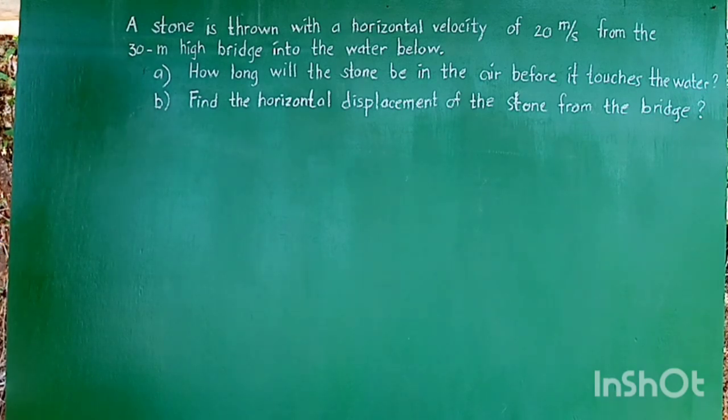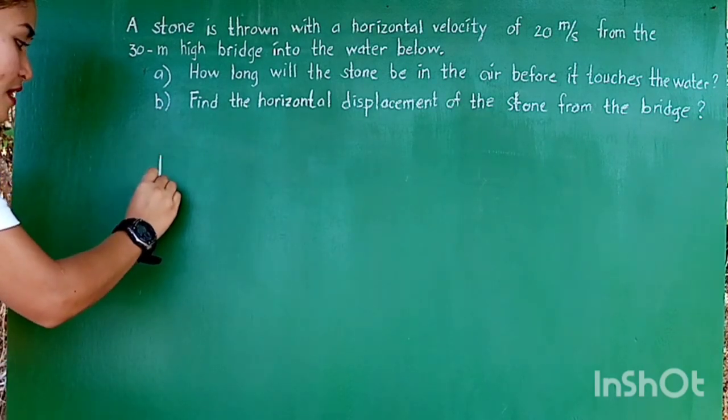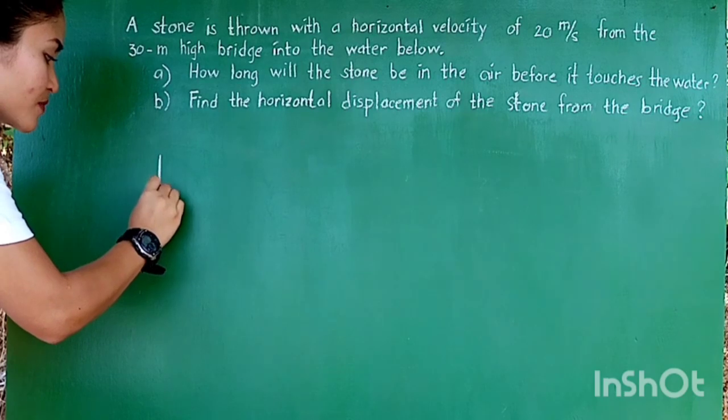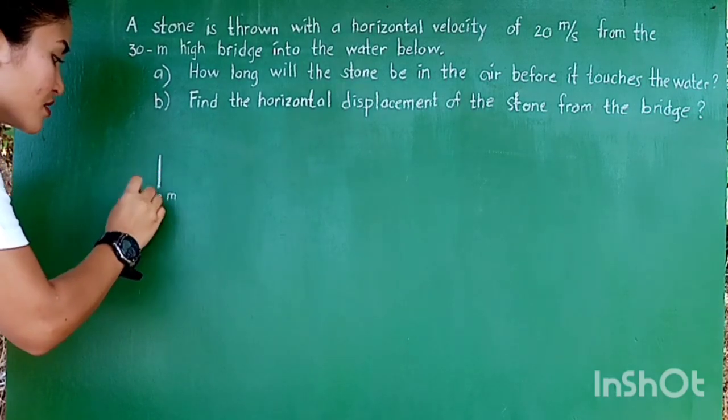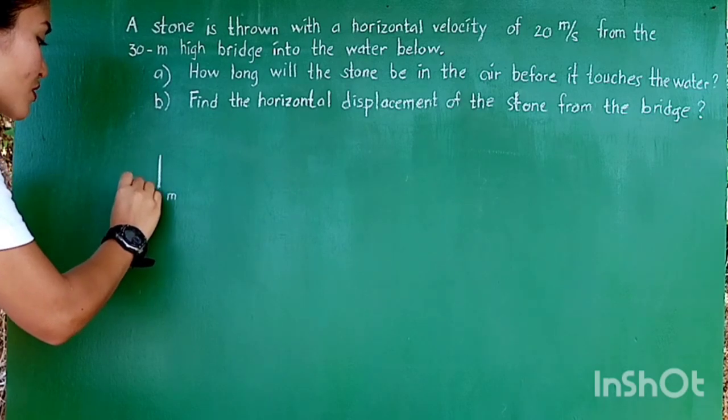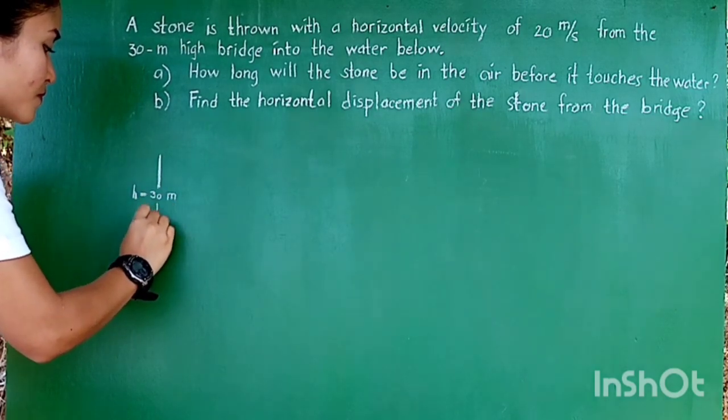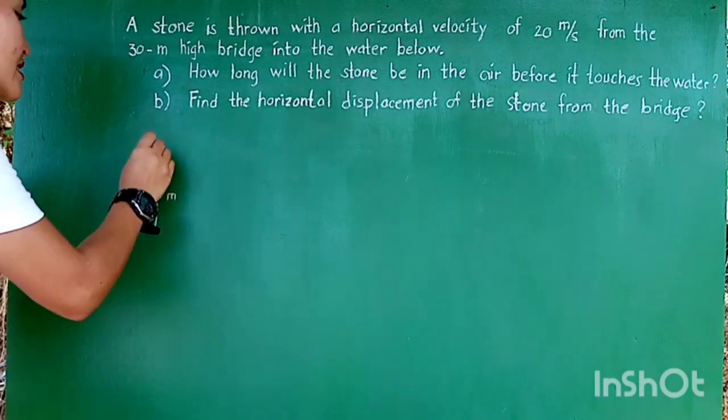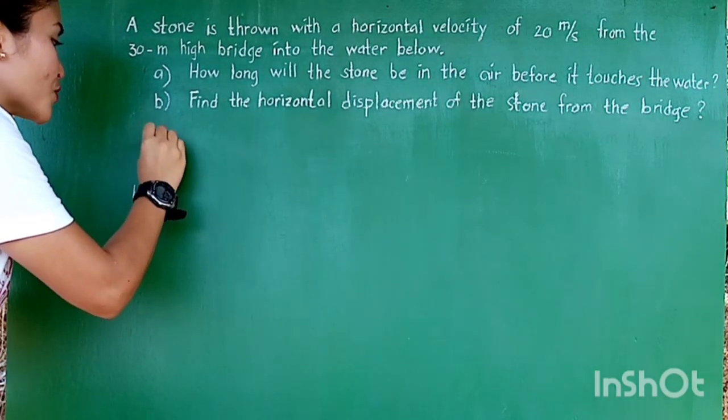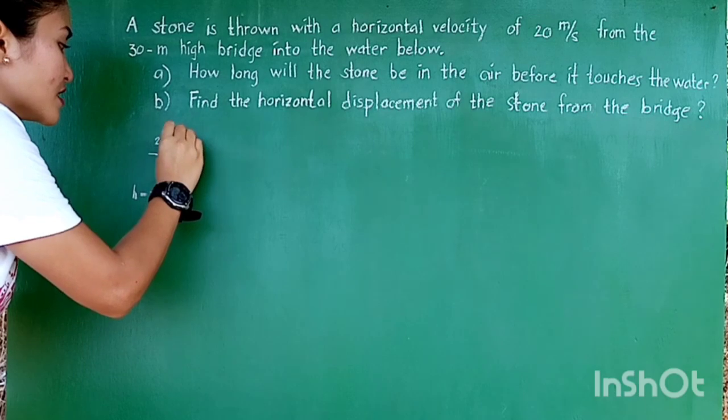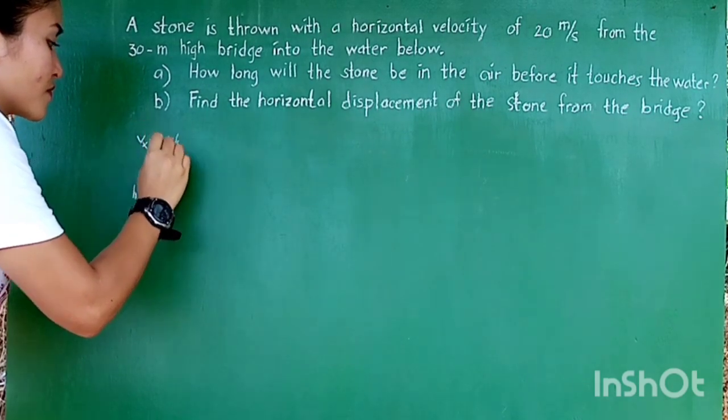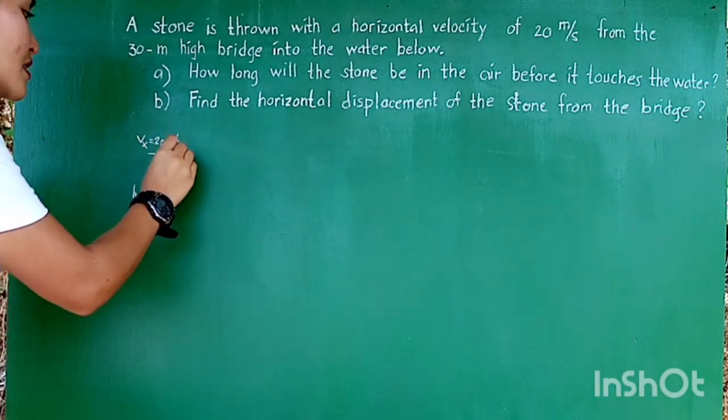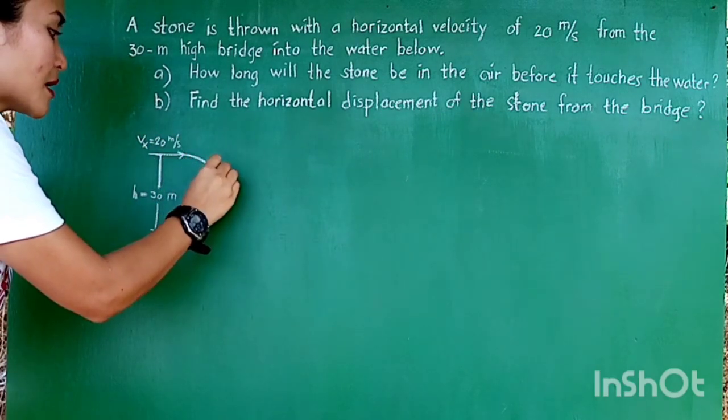So first things first, we need to sketch the situation in this problem. The height of the bridge from where the stone is thrown is 30 meters. The horizontal velocity in which the stone is launched is equal to 20 meters per second. This is our VX. Upon being thrown, the stone travels a parabolic path.